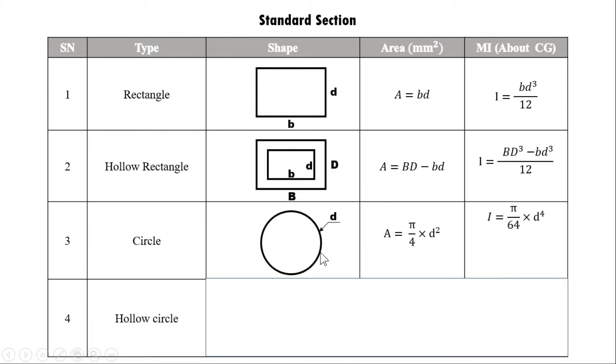For a circle of diameter d, the area is (π/4)×d². The moment of inertia about both the x and y axes is (π/64)×d⁴.